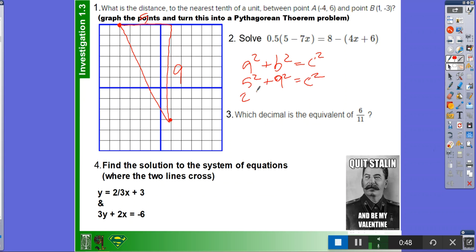So 25 plus 81 equals c squared. And then 25 plus 81 is 106, equals c squared. And then you just square root both of them. And the square root of 106, rounded to the nearest tenth, is 10.3.